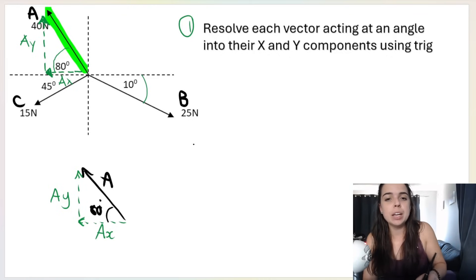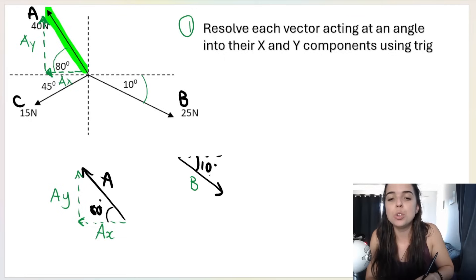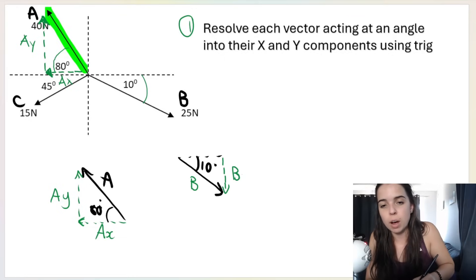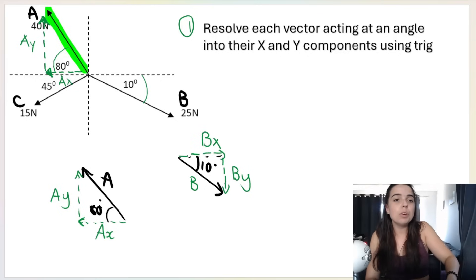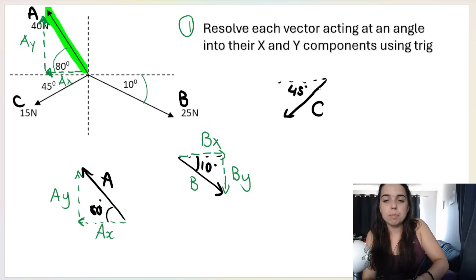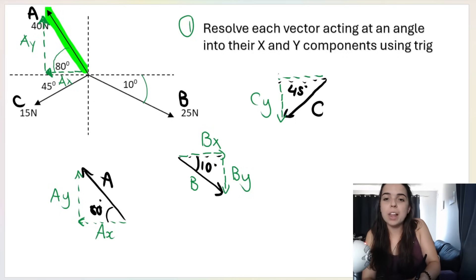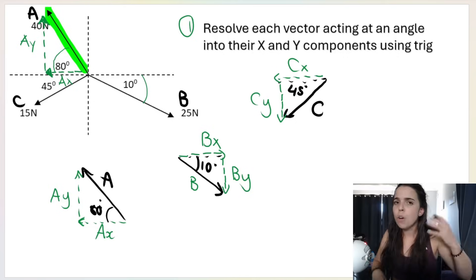How do I draw a little triangle for B? Well, B is going at an angle of 10 degrees, down and to the right. So I draw one vector going down — that's B-y — and one vector going to the right — that's B-x. Then for C, which is going at an angle of 45 degrees, down and to the left: C-y will go down and C-x will go to the left.